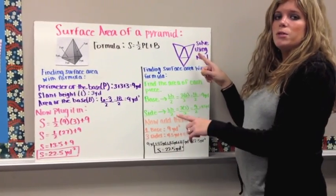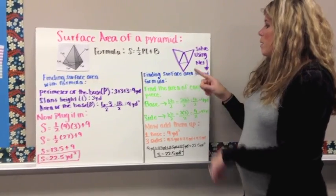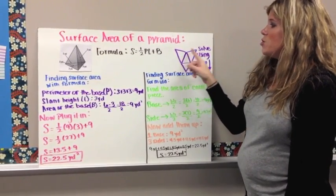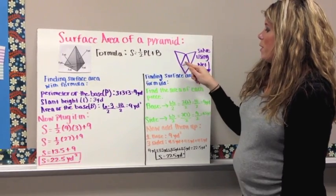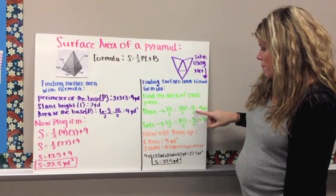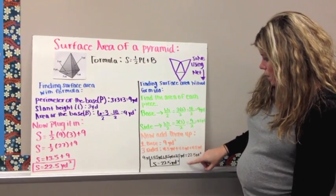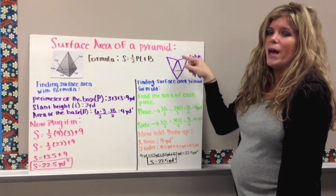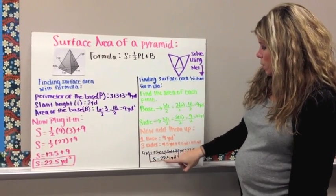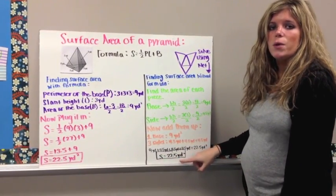Then you can come over here. If that was too difficult, you could try it using the net. And we found the area of each triangle. So we just laid it out flat and we used our knowledge of the formula for area of a triangle. And we just added those up four times. Or we added the three triangles that were the lateral area, and then we added the base. And we have our total here now of 22.5 yards squared. Same thing.